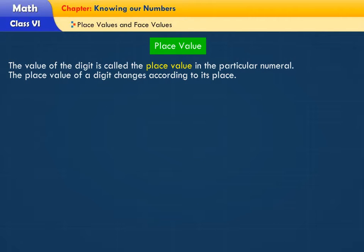The value of the digit is called the place value in the particular numeral. The place value of a digit changes according to its place.